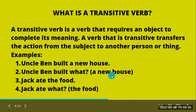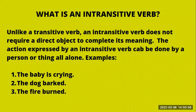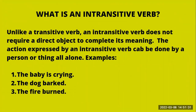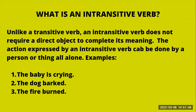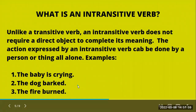Now what is an intransitive verb? Unlike a transitive verb, an intransitive verb does not require a direct object to complete its meaning. The action expressed by an intransitive verb can be done by a person or thing all alone. For example: 'The baby is crying.' That is complete in its meaning — you don't need to ask what the baby is crying.